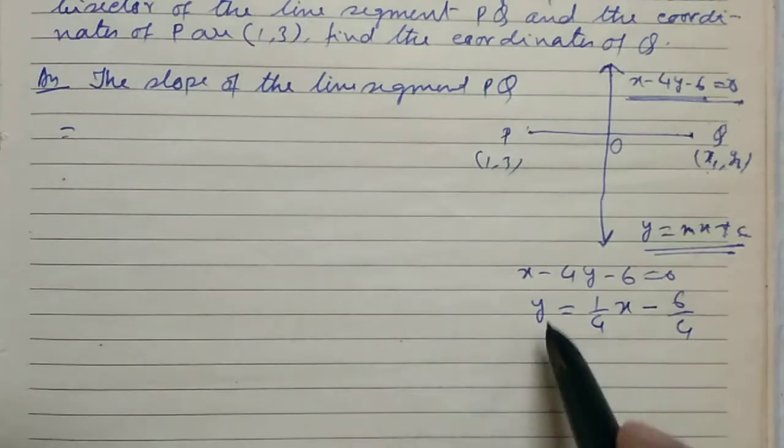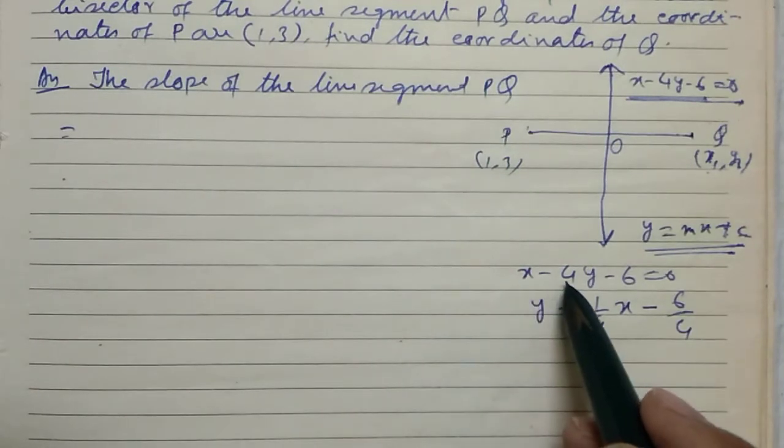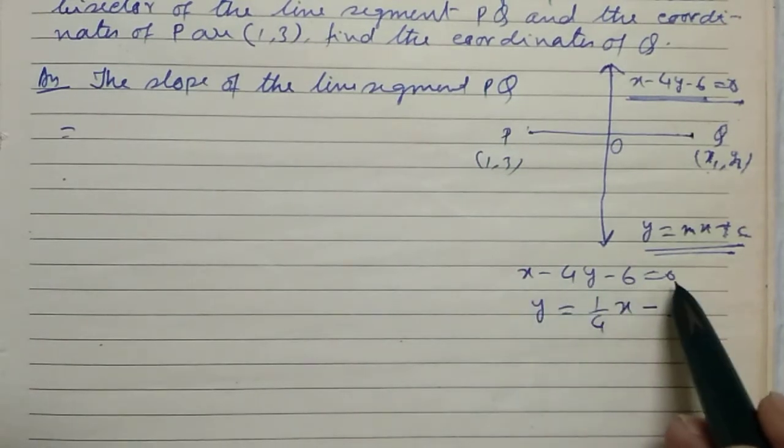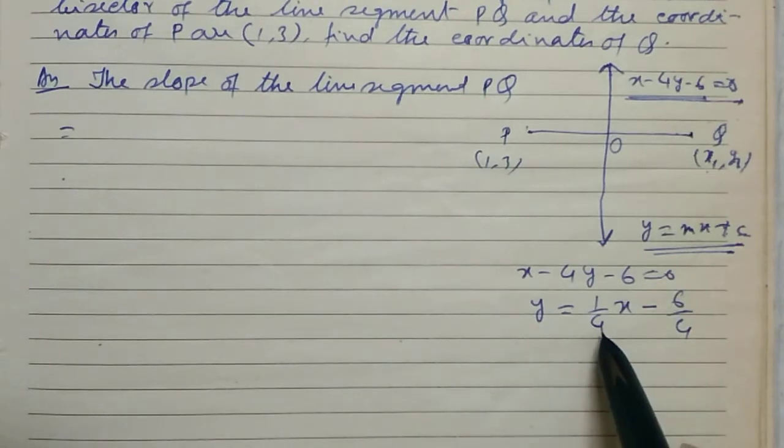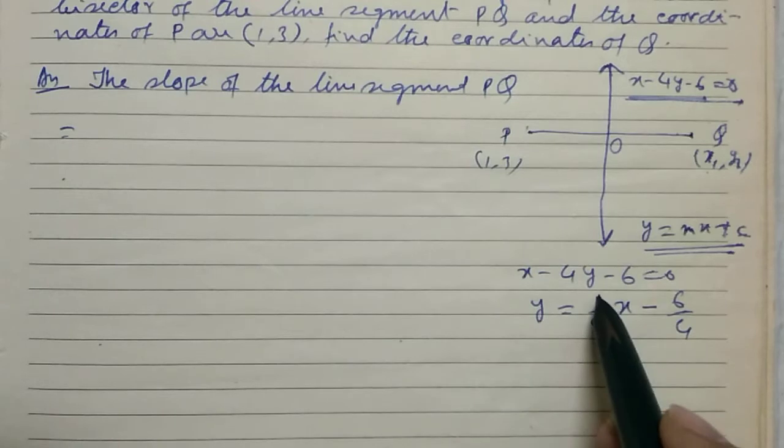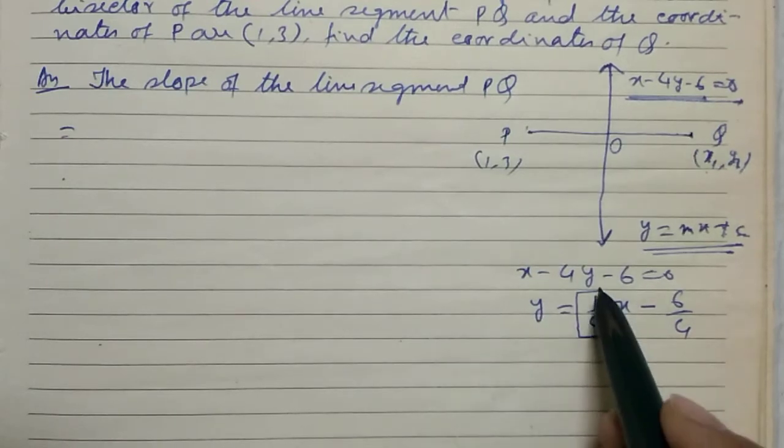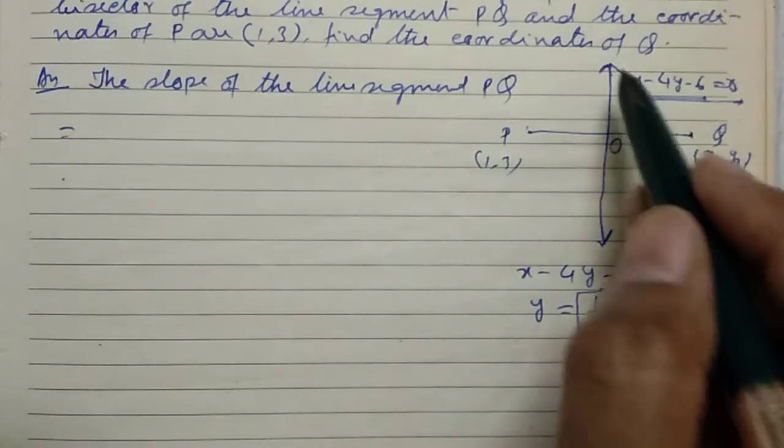We write the given equation x minus 4y minus 6 equals 0 in the form y equals mx plus c. That is 1 by 4. 1 by 4 is the slope of this line.